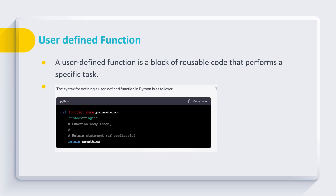A user-defined function is a block of reusable code that can perform a specific task — like addition of two numbers, subtraction of numbers, calculating the volume of a sphere, or any other specific task. We can create a user-defined function for this.